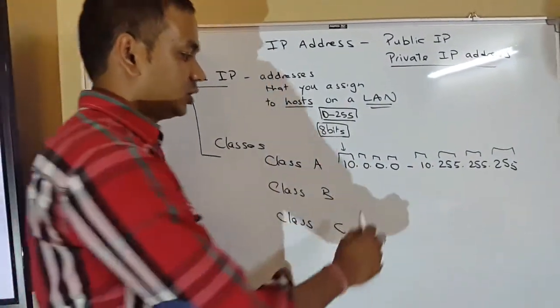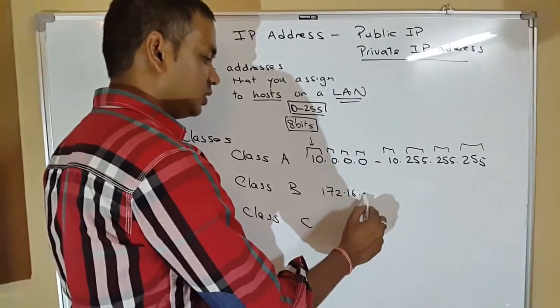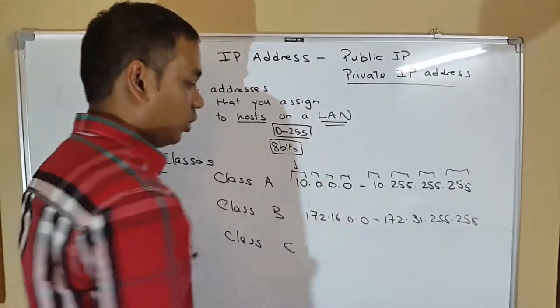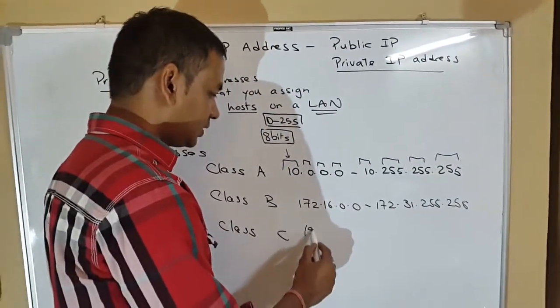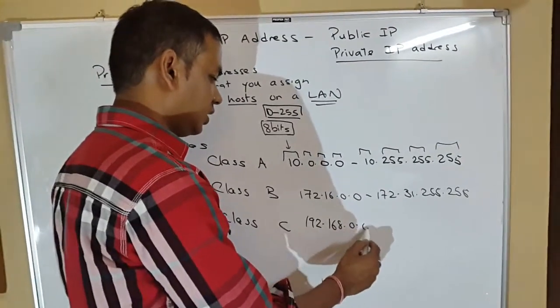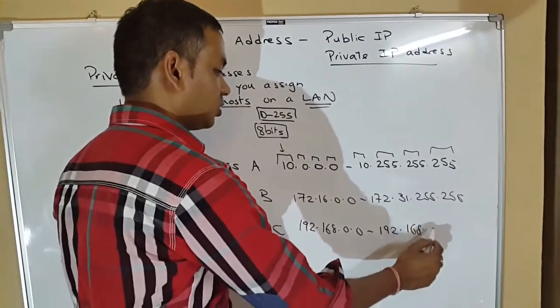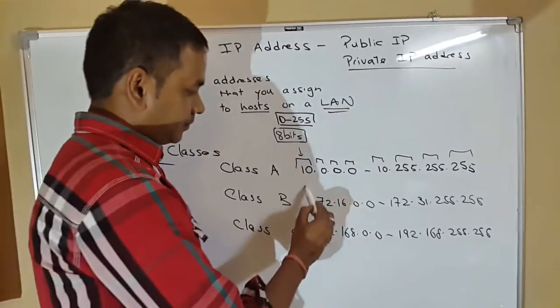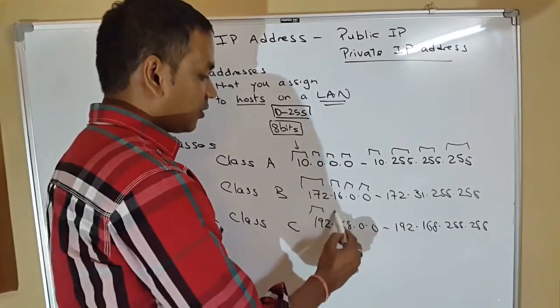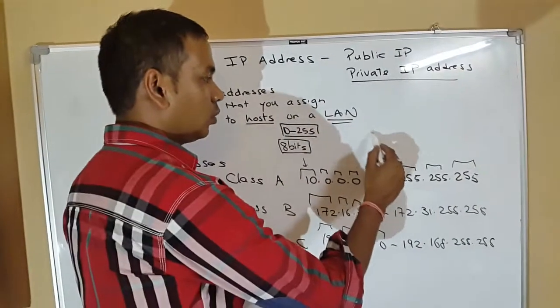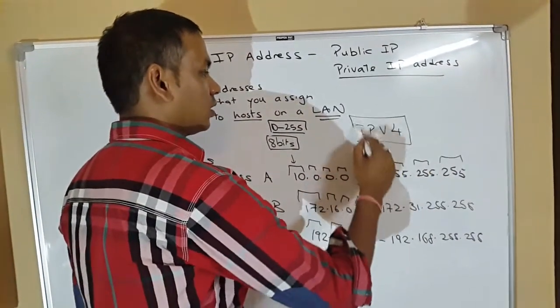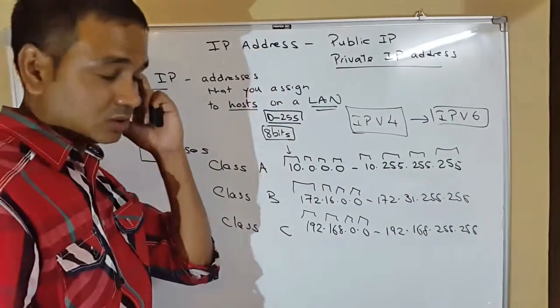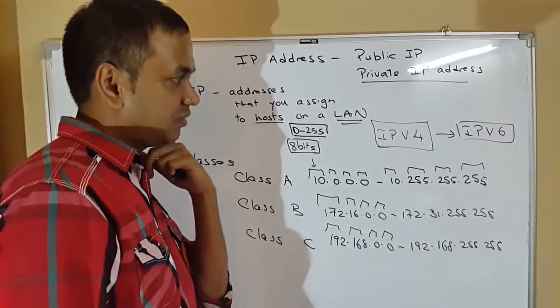And we have another class, which is called the class B, starts with 172.16.0.0 to 172.31.255.255. You have another class as well, it's 192.168.0.0 to 192.168.255.255. The IP address scheme that we are using here is called IPv4 Internet Protocol Version 4. Now we have a new convention as well that we use, it's IPv6 Internet Protocol Version 6. We are not going to explain IPv6 in this tutorial.